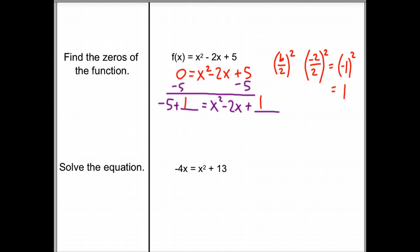which equals negative 1 squared, which is the same thing as 1. So we're adding 1 to both sides. Now let's clean up the left side: negative 5 plus 1 is negative 4. That equals x squared minus 2x plus 1. We're going to factor it so that it multiplies to positive 1 and adds to negative 2. We have negative 1 times negative 1 equals positive 1, and negative 1 plus negative 1 equals negative 2. So what we really have is x minus 1 squared.